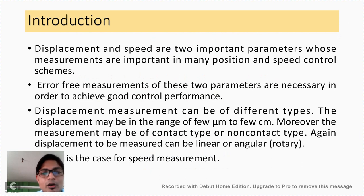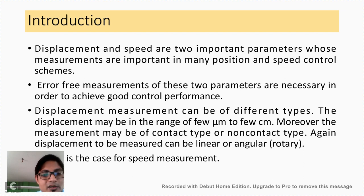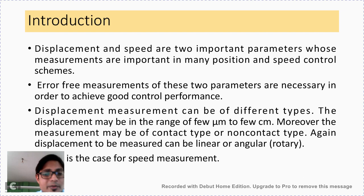Displacement measurement can be of different types. The displacement may be in the range of a few micrometers to a few centimeters. Moreover, the measurement may be of contact type or non-contact type. Displacement to be measured can be linear or angular. Similar is the case for speed measurement — speed can also be measured with contact or non-contact type meters, and in a linear or angular/rotary way.